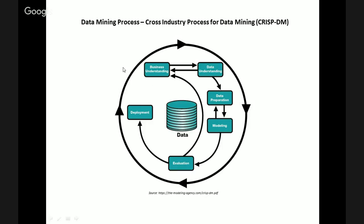The specific steps in the business understanding stage are: number one, determine business objectives; number two, assess the situation, which is really a detailed fact-finding exercise; number three, determine data mining goals; and number four, produce the project plan.